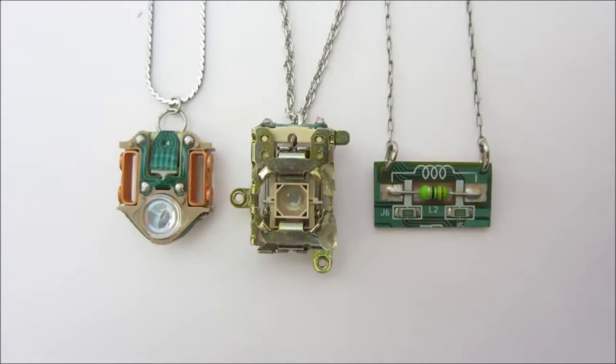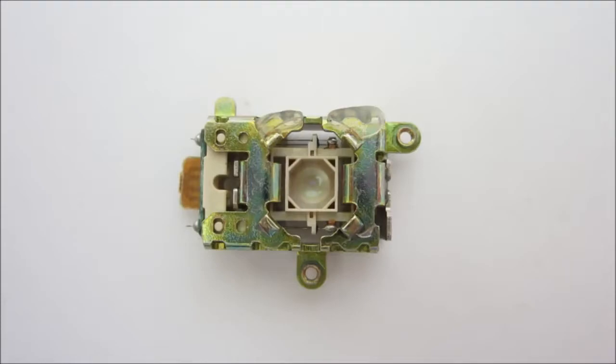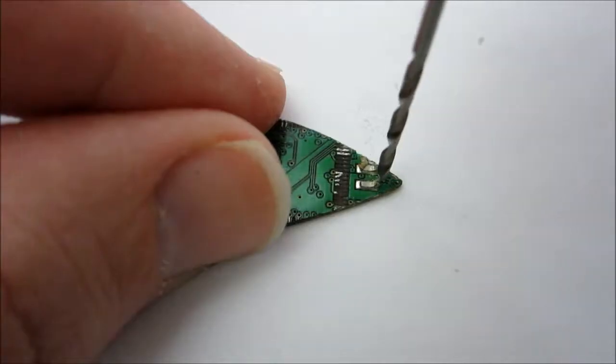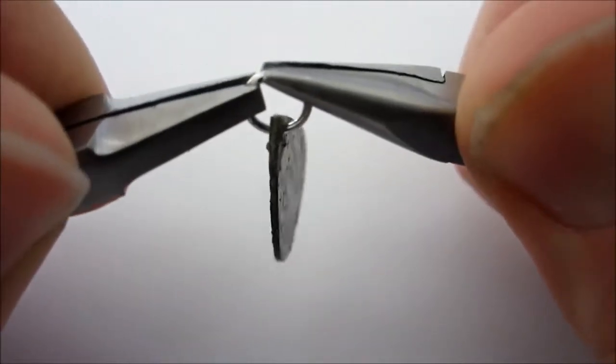Most of these parts don't require much modification to be made into jewelry. First find a hole that you can hang the part from. If it doesn't have a hole, you can just drill one. Then attach a small jump ring.